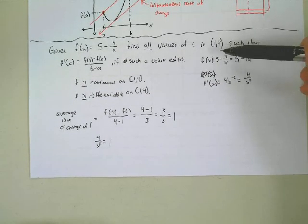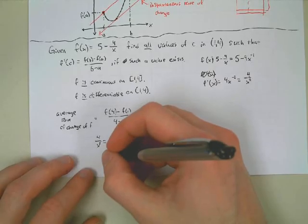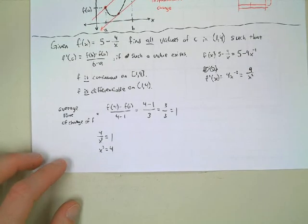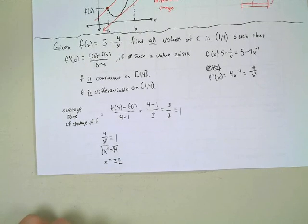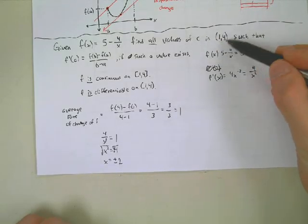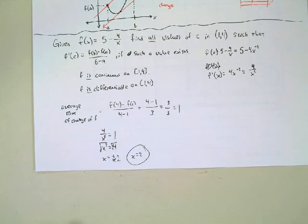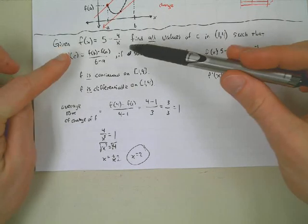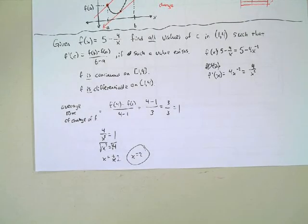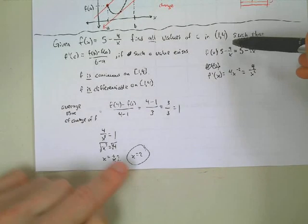How do we solve 4 over x squared = 1? Multiply both sides by x squared to get x squared = 4, then take the square root: x = plus or minus 2. Negative 2 is not in the interval, so we get rid of it. Therefore x = 2 is our solution. At x = 2, the tangent line to our function has the same slope as the average rate of change from 1 to 4.